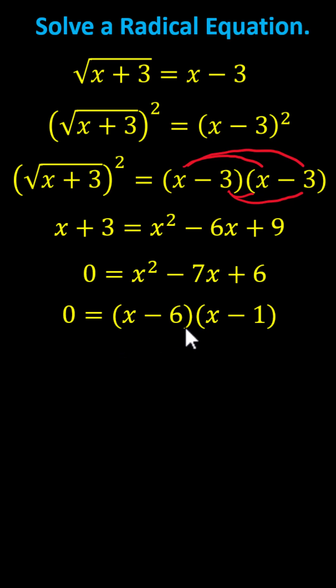The product on the right is equal to 0 when x minus 6 equals 0, or x minus 1 equals 0, which gives us x equals 6 or x equals 1. However, it is important to make sure these values actually satisfy the original equation by performing back substitution.